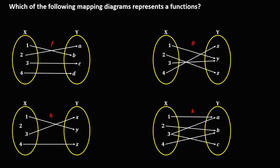Now for mapping diagrams — which of the following mapping diagrams represents a function? A mapping diagram is a function if each element of x is paired with only one element of y. For relation f, we check: 1 is paired with a single element, 2 with a single element, 3 with a single element, and 4 with a single element. Therefore, this diagram is a function.